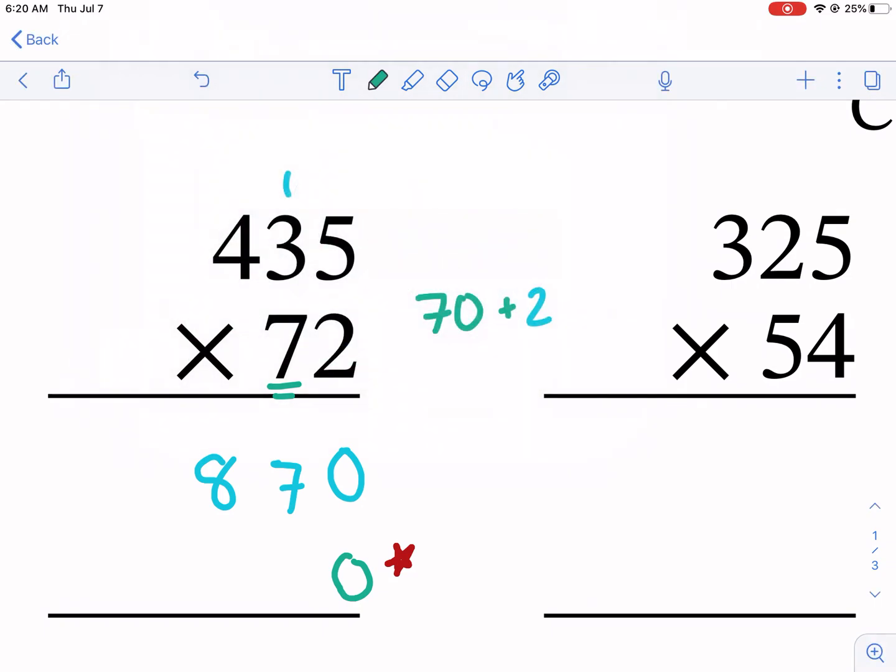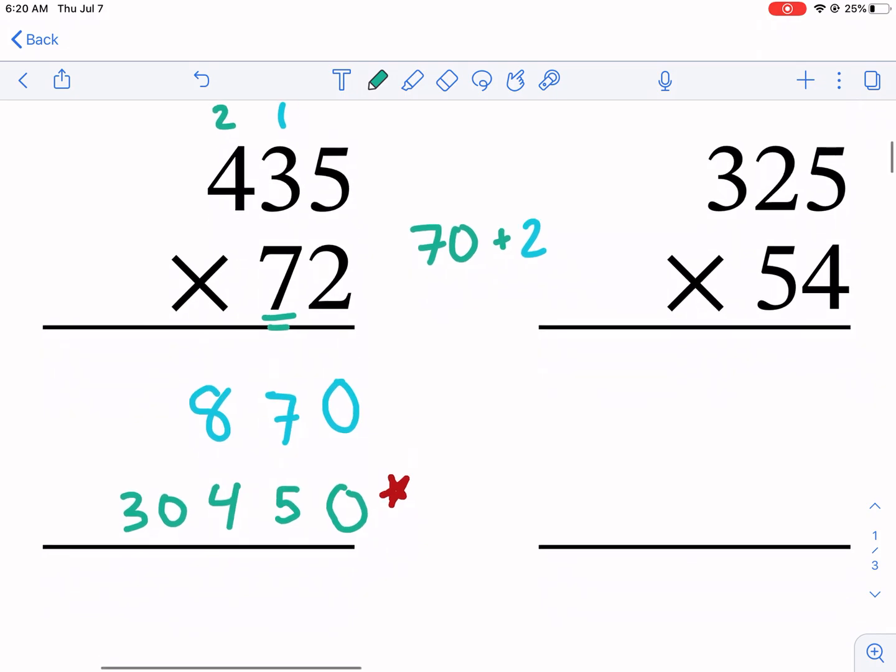So we're going to go ahead and do that. Seven times 5, now we can start now that we have the zero. 7 times 5 is 35, carry the 3. 7 times 3 is 21 plus 3 is 24, carry the 2. 7 times 4 is 28, and then we have 30.